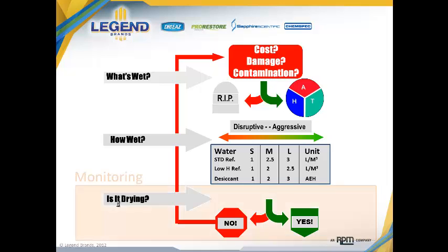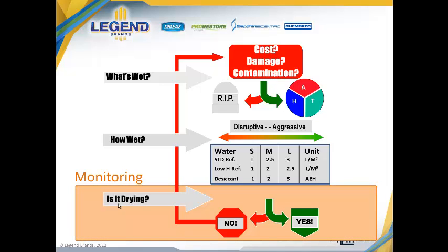Determining whether or not you're making progress is by far the most important question we ask in the restoration environment. I'm not hired by my customer to determine what's wet — they already know the building's wet. I need to know specifically what is wet to set my scope, and how wet things are to do my work. But what a property owner or insurance company wants to understand is how what I'm doing is taking us from a wet condition back to normal faster than nature would do it by itself — what evidence do I have that my role is expediting that rate, preventing damages, and mitigating cost.